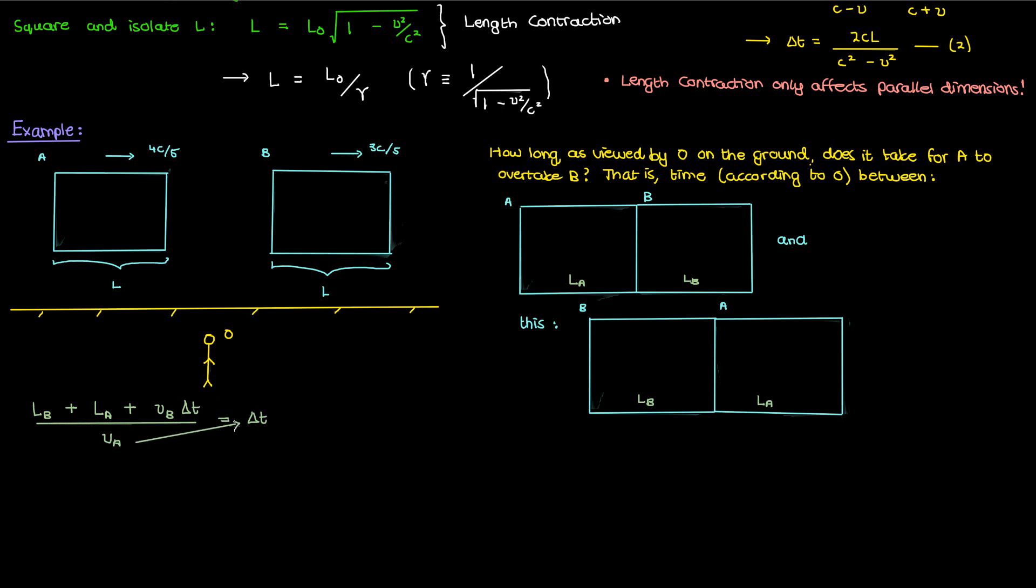I can multiply both sides by VA, take the delta T term on the left and then isolate delta T. If I do that here's what I'll get. The rest of this problem is just plugging things in. V sub A is 0.8C, V sub B is 0.6C. So the difference would just be 0.2C or one-fifth C.